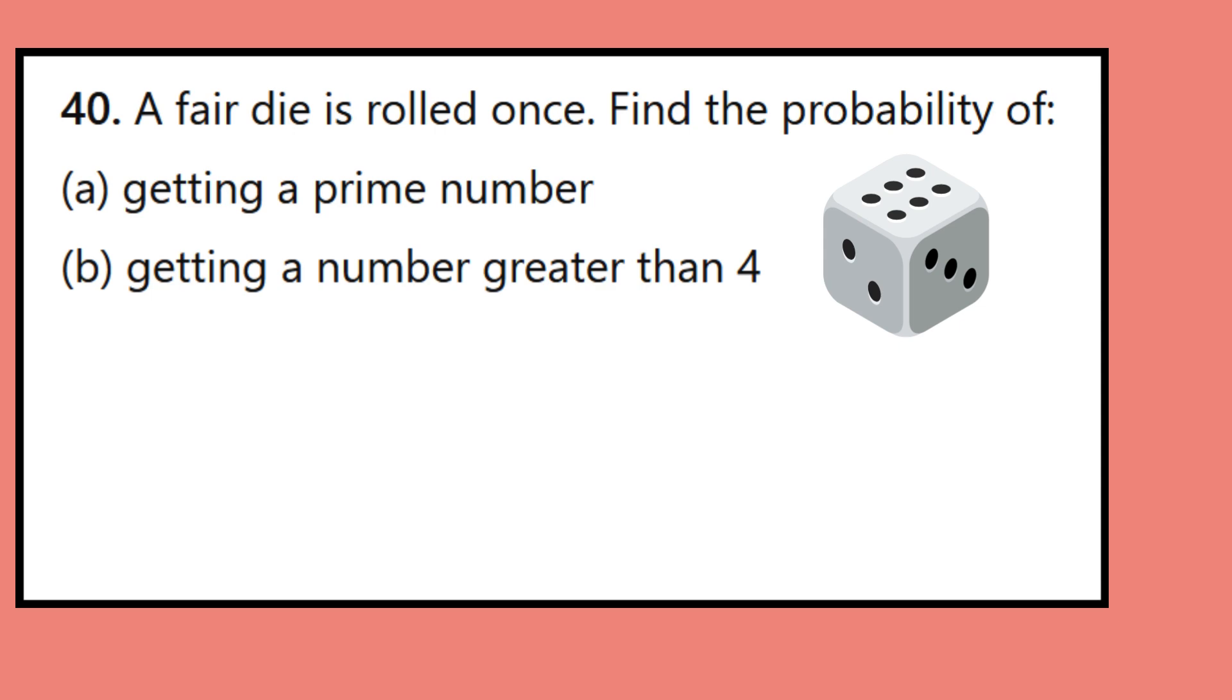Question 40: A fair die is rolled once. Find the probability of a getting a prime number, b getting a number greater than 4.